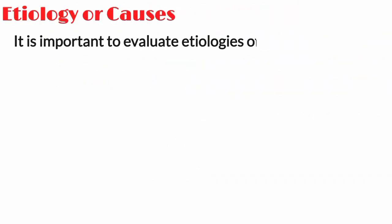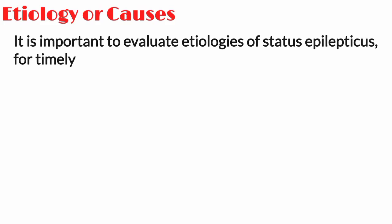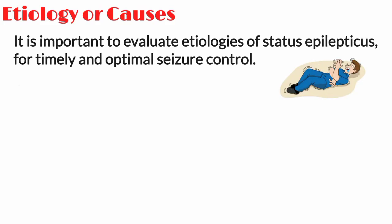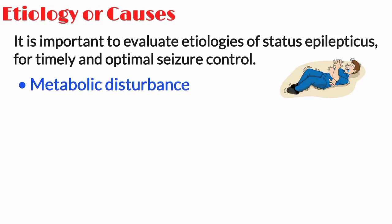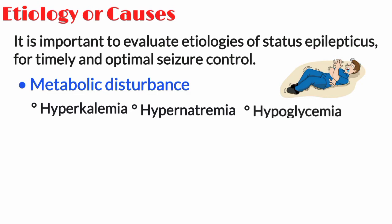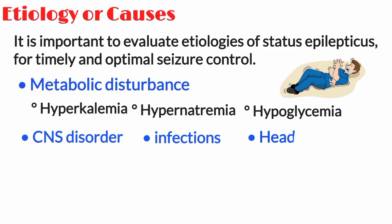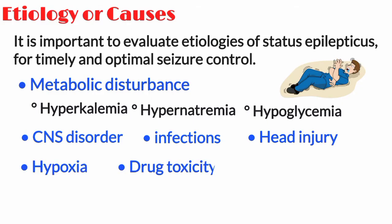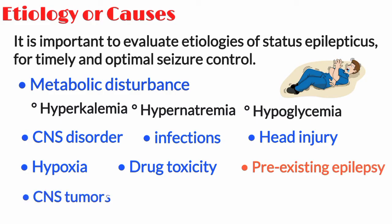It is important to evaluate the etiologies of status epilepticus for timely and optimal seizure control. Causes of status epilepticus include metabolic disturbances such as hyperkalemia, hyponatremia, and hyperglycemia; central nervous system disorders; infections; head injury; hypoxia; drug toxicity; pre-existing epilepsy; central nervous system tumors; chronic alcoholism; and strokes.